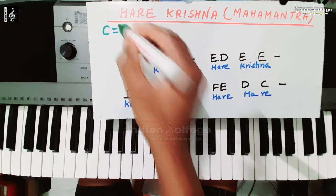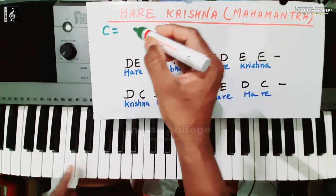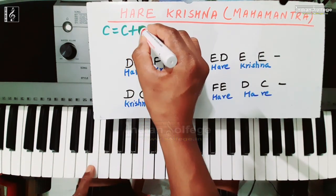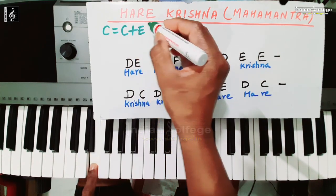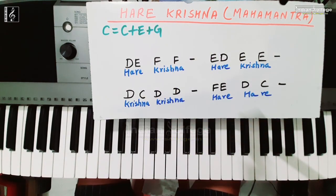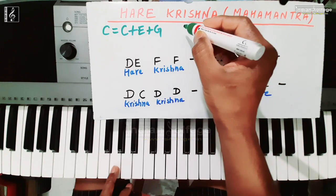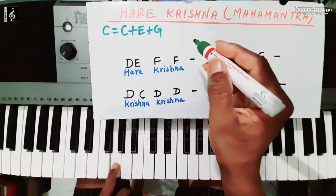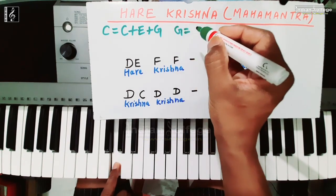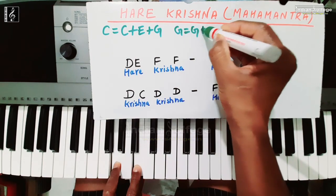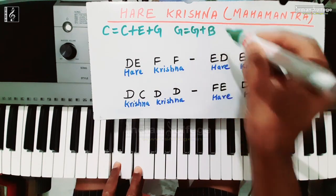C major में notes हैं: C, E, और G। Next chord है G major — जो dominant chord था। G major यानि G, plus B, and plus D। Chords बनाने के लिए alternate notes लेने होते हैं, जैसा मैं already बता चुका हूँ।